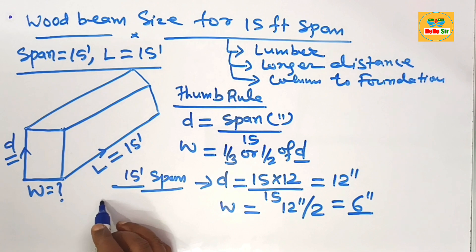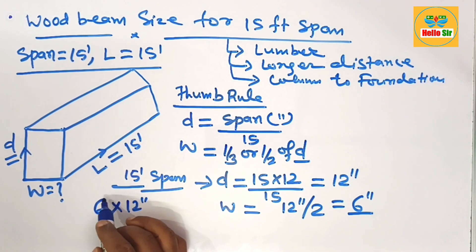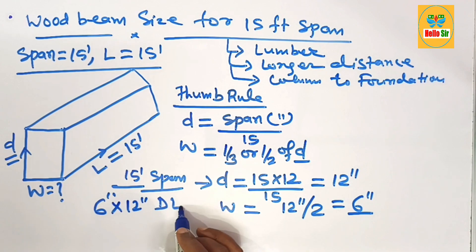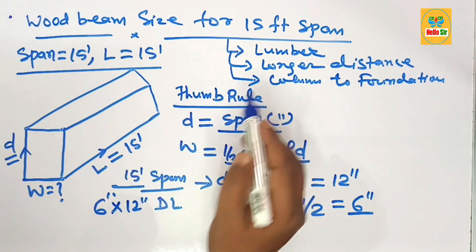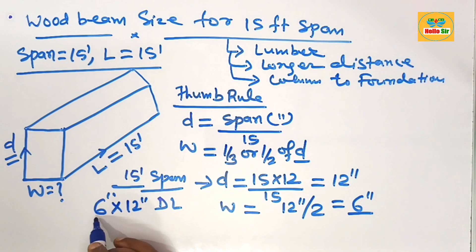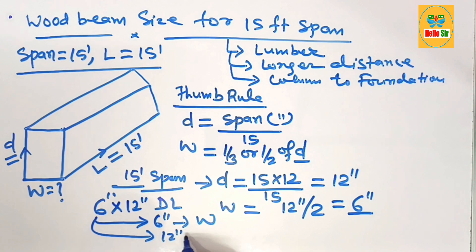This means for a span of 15 feet, you need something like 6 by 12 inches dimensional lumber as the wood beam required to span 15 feet, in which 6 inches is the width section of the beam and 12 inches is the depth section of the beam.